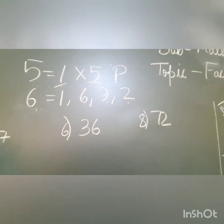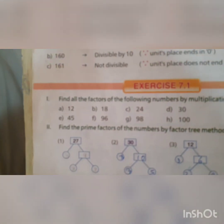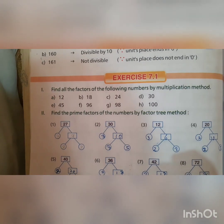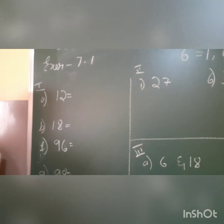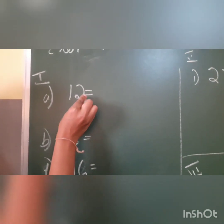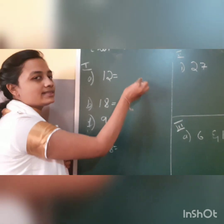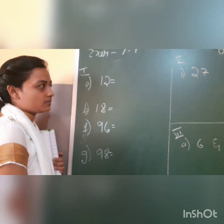Next we will go for the exercise problem, and as we do the sums, I will recap the concepts. So if you see the first question: find all the factors of the following numbers by multiplication method. How to find all the factors? You have to see in whichever table this number comes, and write that. Multiplication method.